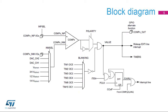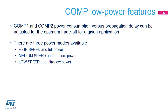This slide shows the general block diagram of the comparator integrated in the device. The comparator's power consumption can be adjusted to have the optimum trade-off between speed and energy efficiency for a given application. There are three modes available: high-speed, medium-speed, and ultra-low-power.